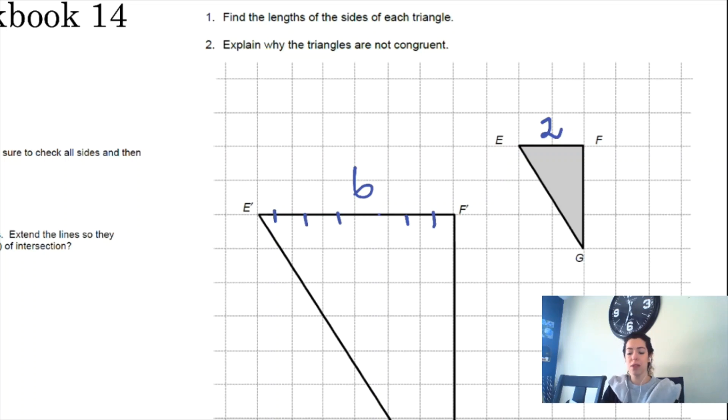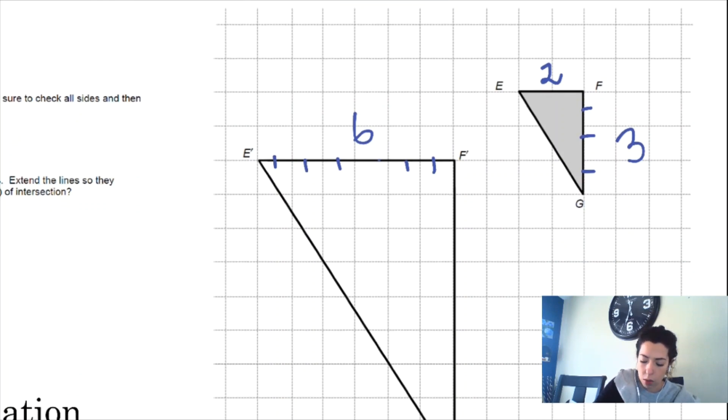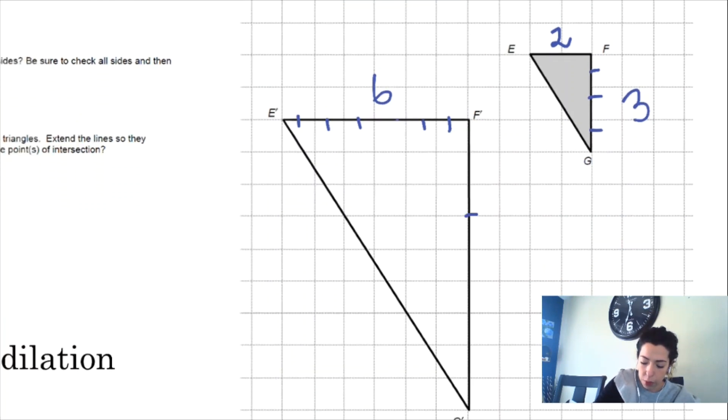What is the length of segment FG? One, two, three. And what is the length of segment F prime G prime? One, two, three, four, five, six, seven, eight, nine.